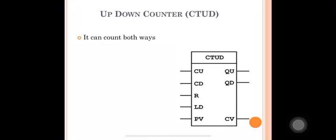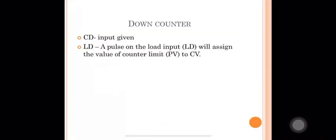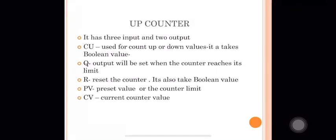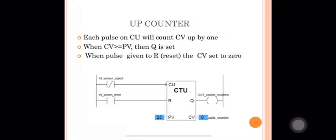So in this case we use the up-down counter. Regarding the data type, PLC counters use the WORD data type, which is 16-bit. This means the counting limit is 2 to the power of 16, which gives a maximum count of 0 to 65,535. So these are the three types of counters: up counters, down counters, and up-down counters.